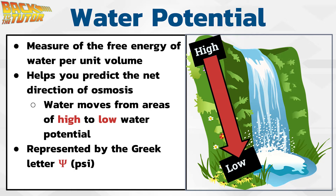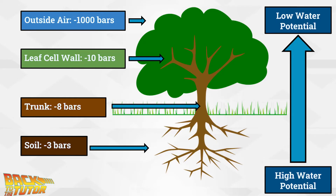Water potential is represented by the Greek letter psi. You can remember that psi represents water potential because it looks kind of like a trident. Poseidon had a trident, along with King Triton from The Little Mermaid and King Neptune from that one Spongebob movie, and they're all associated with water. Water potential is measured in a pressure unit such as bars, which is what they use on the AP formula sheet. A good example of the importance of water potential in nature is seen in trees: the roots will have a higher water potential than the trunk, leaves, and atmosphere respectively. This ensures that trees can take in water through the roots and transport it to the leaves for photosynthesis, even going against gravity.